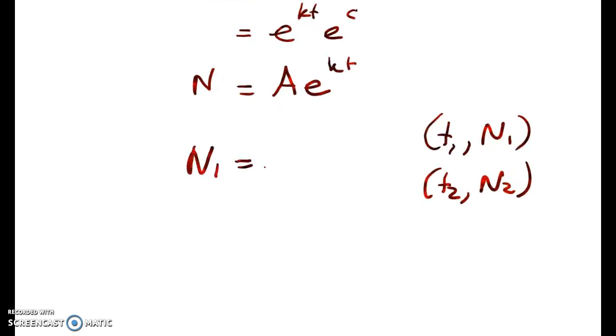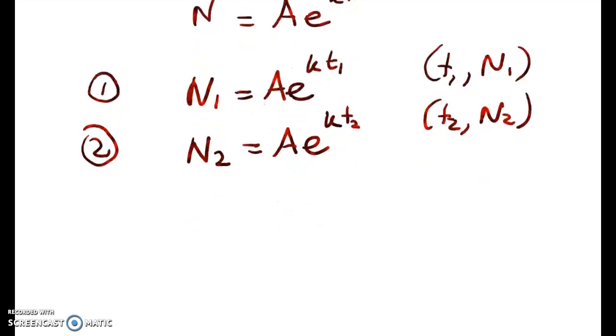We get n1 as a e to the k times t1, and n2 is equal to a e to the kt2. Now we want to eliminate a and solve for k. So if we take either one of these equations and divide it by the other, we're going to get the following equation. So I've done n1 over n2 on the left side.